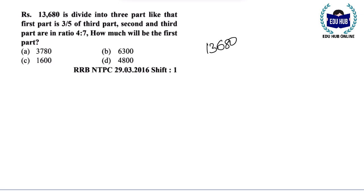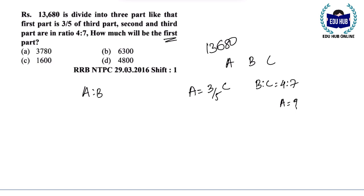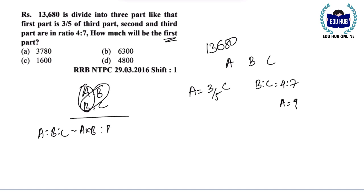Rs. 13,680 is divided into 3 parts. The first part is 3 by 5th of the third part. The parts are A, B, C. The second part is 3 by 5th of the third part. The second and third parts are in the ratio B is to C = 4 is to 7. How much will be the first part? We need to find A is to B is to C.